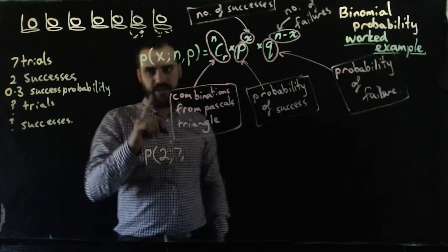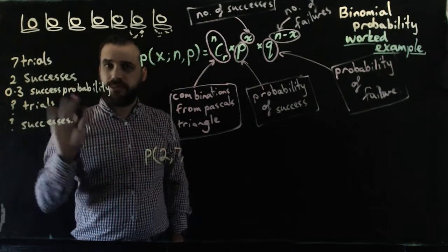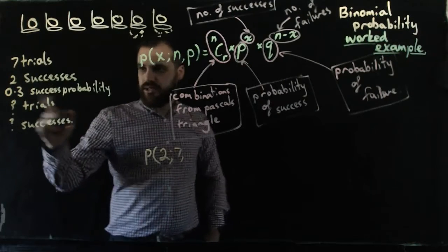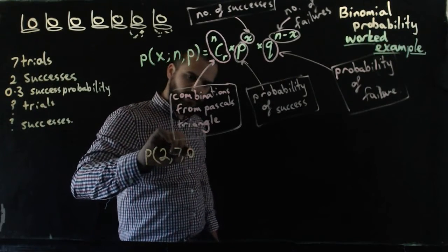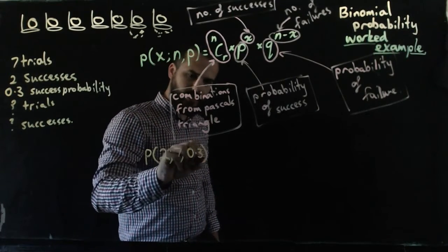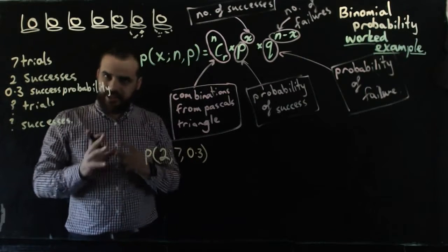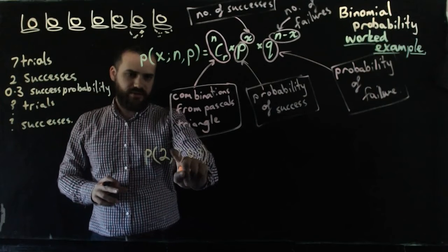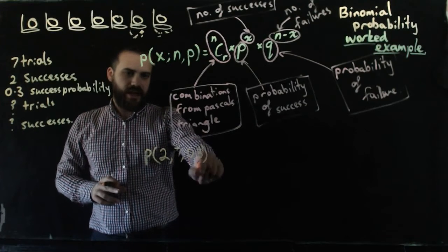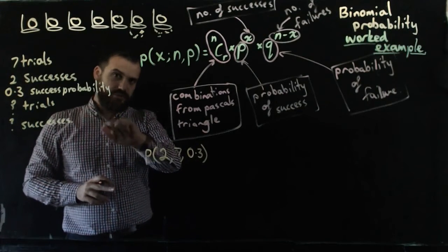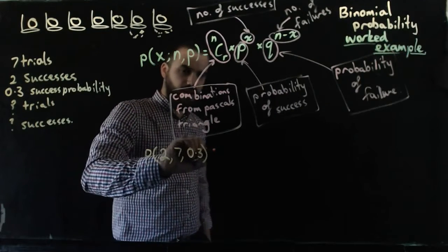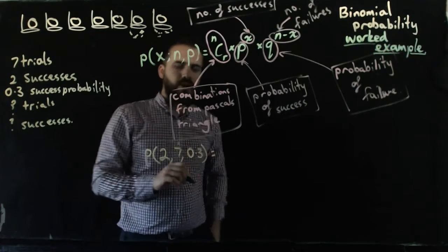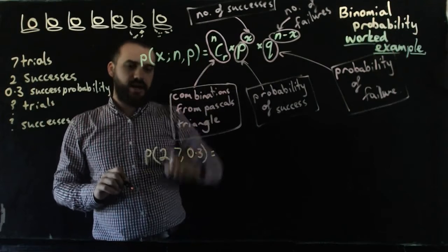If the probability of success on a single throw—remember we're playing basketball here—is 0.3, so you're going to get exactly two out of seven, exactly two out of seven. Let's just use a comma there and the probability of success on each individual one is 0.3.